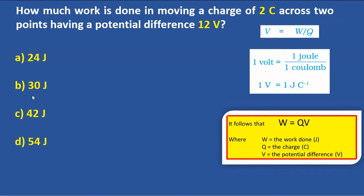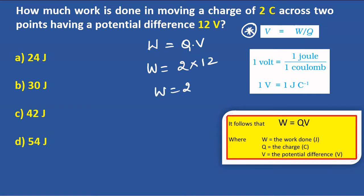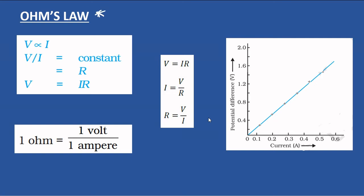Next question: how much work is done in moving a charge of 2 coulombs across two points? The formula is W = Q × V. The charge is 2 coulombs and the voltage is 12 volts, so W = 2 × 12 = 24 joules. The unit for work done is joule. Also note: 1 volt = 1 joule per coulomb — this is very important.